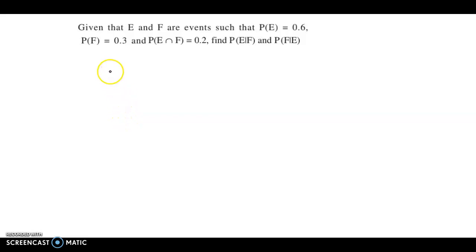Hello and welcome back. We now discuss an example from probability. The question is: given that E and F are events such that probability of event E is 0.6, probability of